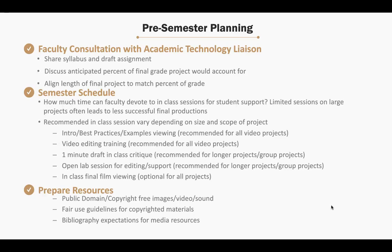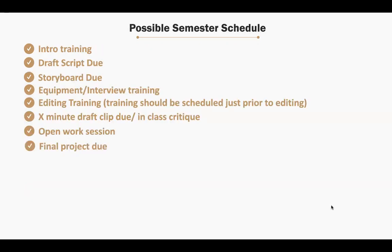Here's a quick look at a possible semester schedule. Not all elements are necessarily needed, but the sequence could include: intro training, draft script due, storyboard due, equipment training, editing training, a clip draft due with possible in-class critique, a possible open work session, and then the final project due. A larger project might include all of these; a smaller project wouldn't. Even if they aren't graded, a draft script and storyboard are helpful — they make students work through the process step by step, so when they reach editing they have a roadmap, a guide, and their research ready. Thank you — you can re-watch the longer video if you're interested.